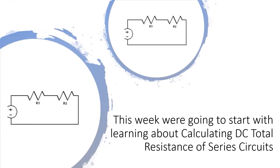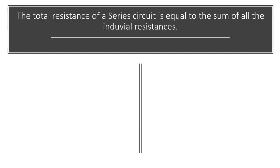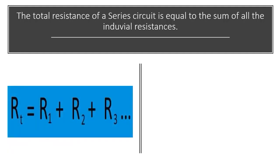We're going to learn how to calculate total resistance of DC circuits. We're also going to learn how to calculate voltage drop across the DC circuit. The total resistance of a series circuit is equal to the sum of the individual resistances. RT, which means resistance total, is equal to R1 plus R2 plus R3, and so on, however many resistors you have.